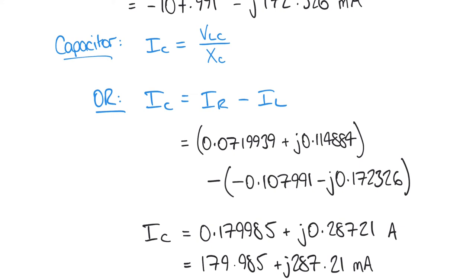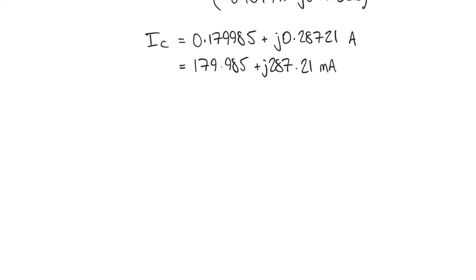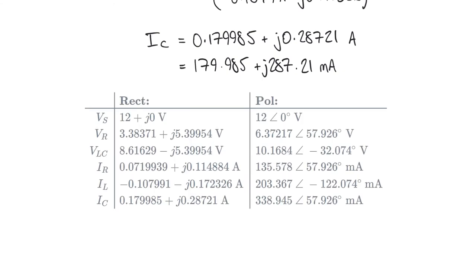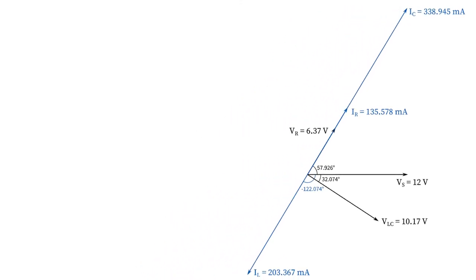The hard work is done. The last step is to plot voltages and currents on a phasor diagram. To do that it's preferable to have these values in polar form. We listed V_S, V_R, V_LC, I_R, I_L, and I_C — all currently in rectangular form — and convert them using a scientific calculator to get their magnitudes and angles. The resulting phasor diagram is shown here.